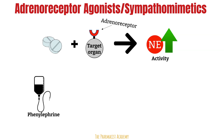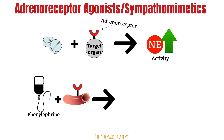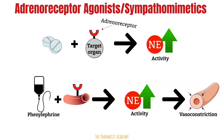We use these agents to manage shock, which is characterized by hypotension and reduced blood flow to organs. Phenylephrine binds to alpha receptors, which is a type of adrenergic receptor on blood vessels. This increases the activity of norepinephrine and leads to vasoconstriction. I have a video on vasopressors and the different types of shocks — link above.